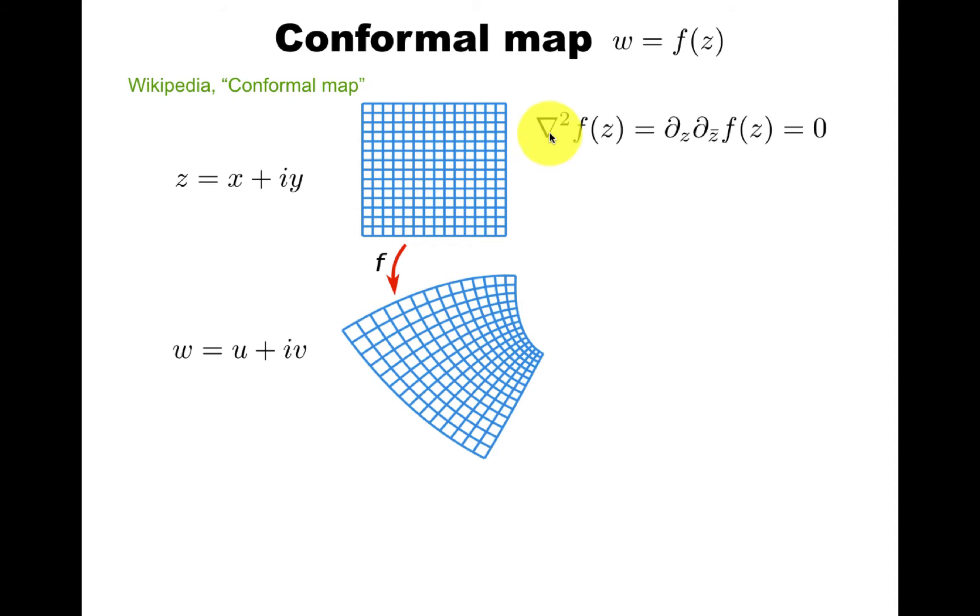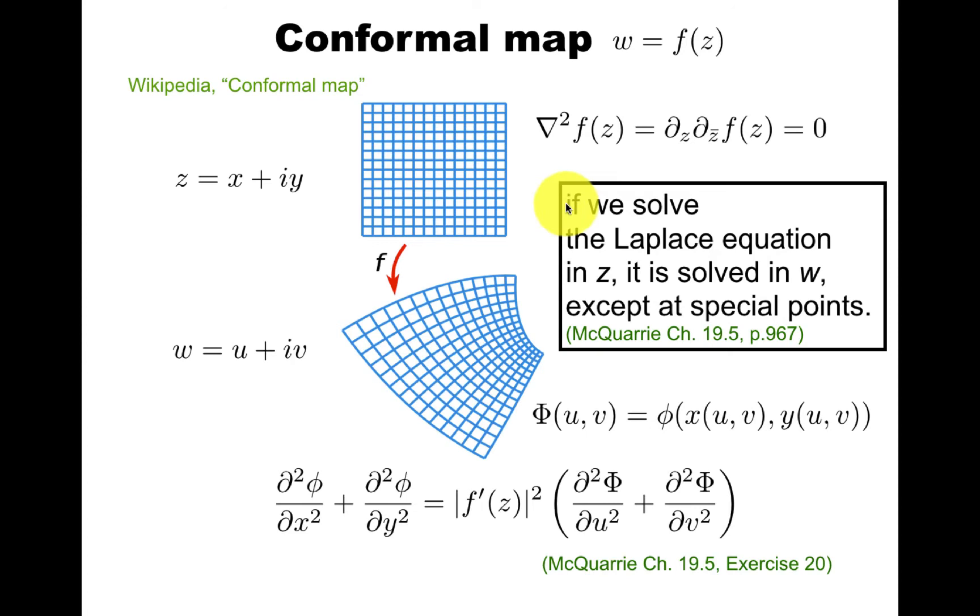The fast way to see is to say that you can write the Laplace in the complex coordinates as ∂z ∂z-bar. And any analytic function is annihilated by ∂z-bar. So at least it looks like you will still solve the Laplace equation after the map. And this fast argument is mostly true. If we solve the Laplace equation in z, it is solved in w, except there could be problems at special points. It's explained in McQuarrie. And I encourage you to do this calculation.